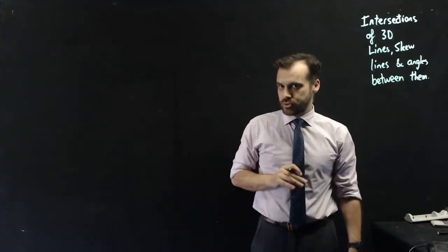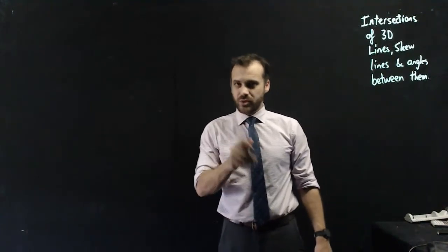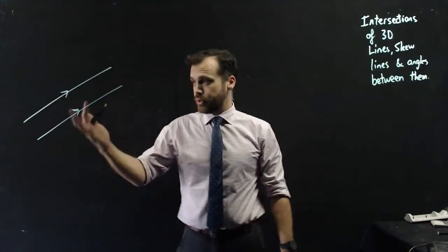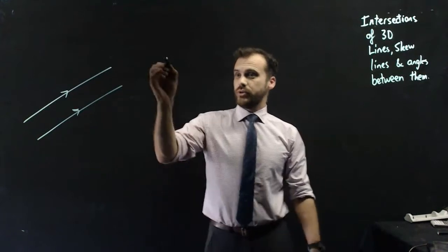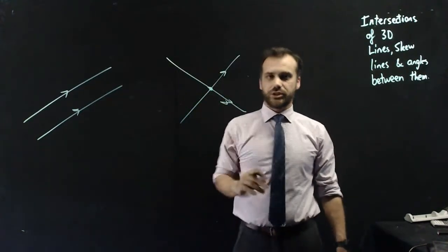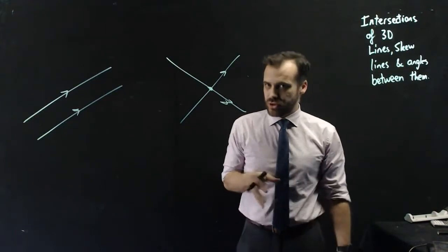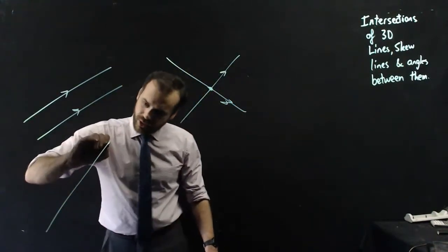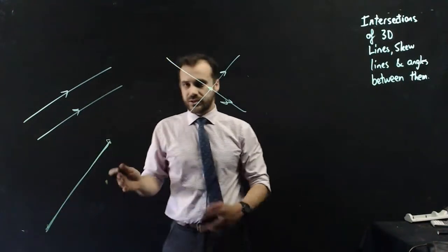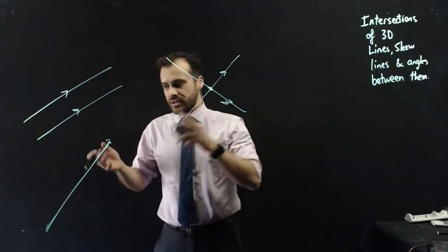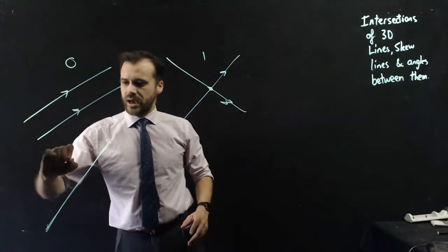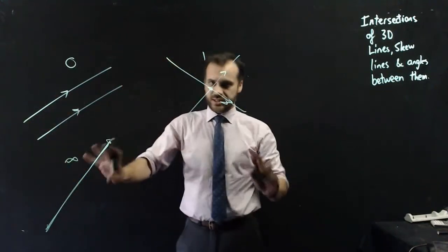Consider two lines in two-dimensional space. You really only have three options. They could be parallel, in which case they will never touch. Or they could intersect and have an intersection point. The third option is that the two lines could be identical, in which case they would have an infinite number of intersection points. So: zero intersection points, one intersection point, or infinitely many intersection points.